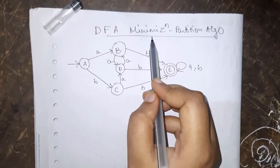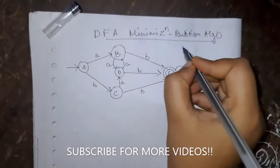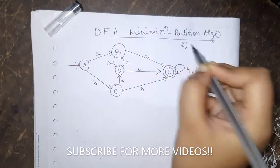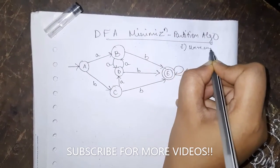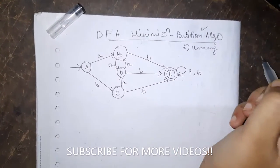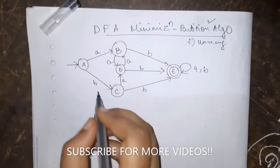DFA minimization. DFA can be minimized by first eliminating the unreachable states and then we can use the partition algorithm on it. So what is partition algorithm? We shall see.